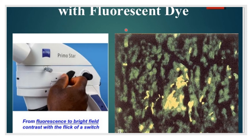Fluorescent microscopy can also be performed using a fluorescent microscope with a UV bulb. Smears are stained with fluorescent dyes such as rhodamine and auramine. This is a sensitive method of diagnosing tuberculosis; tubercle bacilli give an apple green type of fluorescence under the fluorescent microscope.